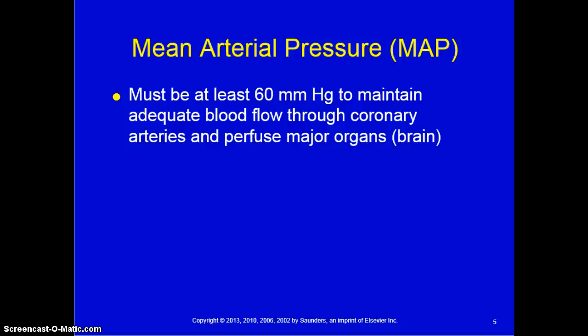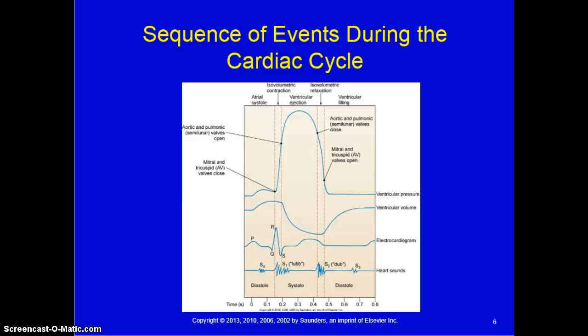We need to think about the function and functionality of the heart as a muscle. When looking at the electrophysiologic properties of the heart, they are responsible for regulating heart rate and rhythm. Cardiac muscle cells possess the characteristics of automaticity — they automatically know when to contract — as well as excitability, conductivity, contractility, and refractoriness.